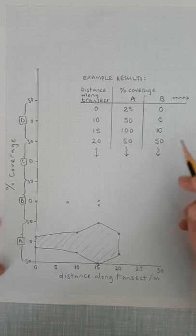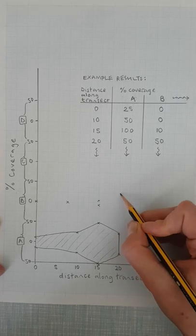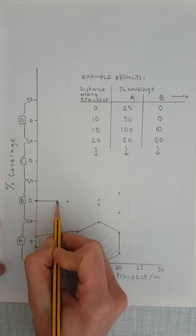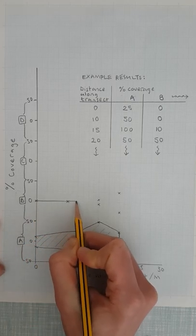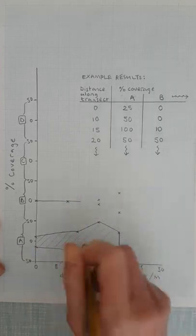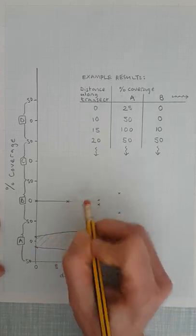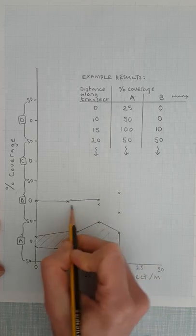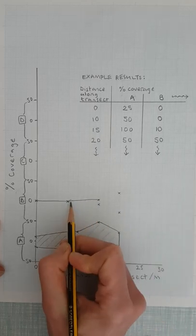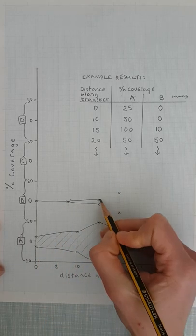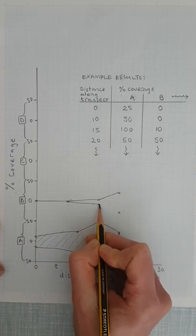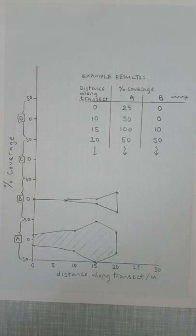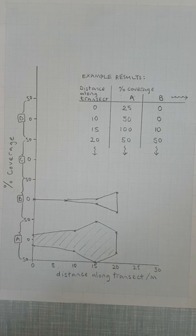And then at 20 meters there's 50, so that's there and there. Then what we'll do with these, you just join them up there. That single line just shows that you've got nothing. Oh actually, I've just made a mistake there. So now we've got to show that there might be slightly more of B growing as we get towards the 15 meter point there, and then a lot more as we approach the 20 meter point. And there we have a lovely representation of the distribution of B along the transect.